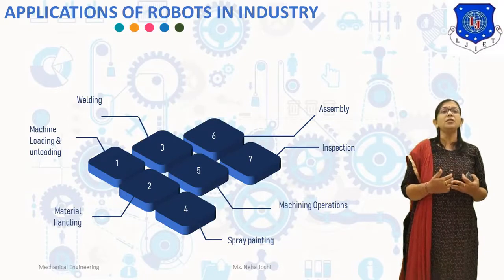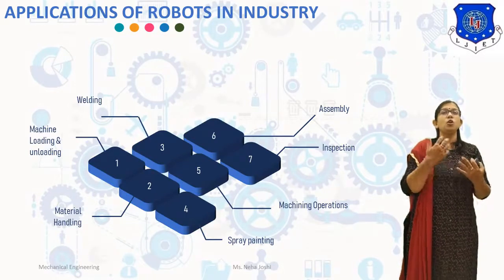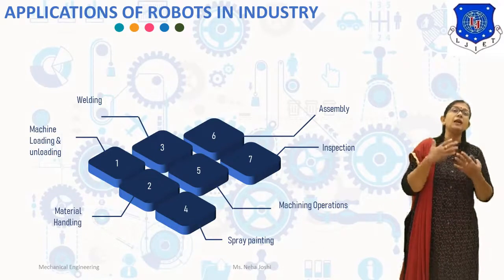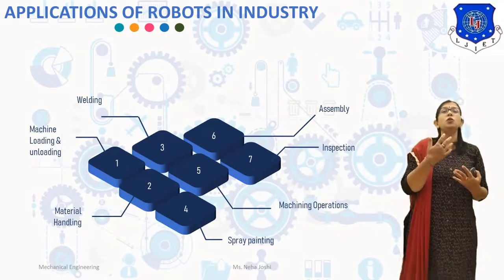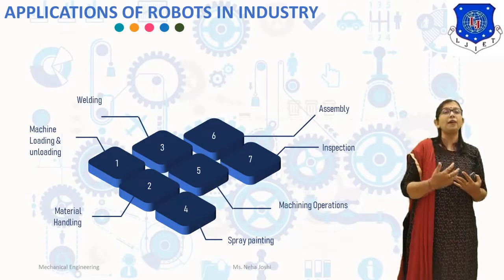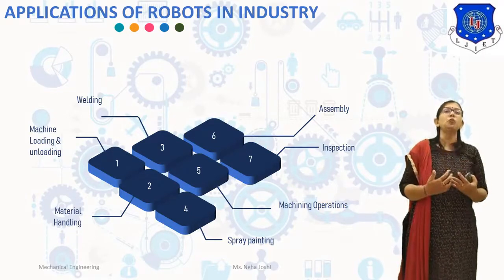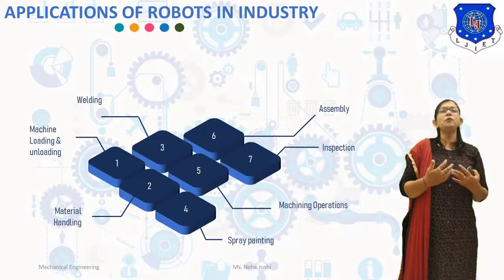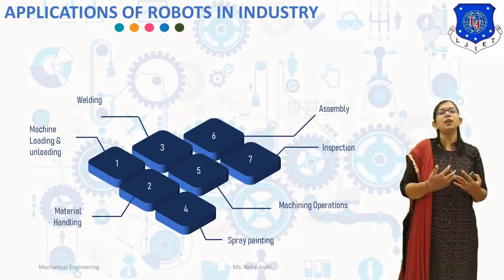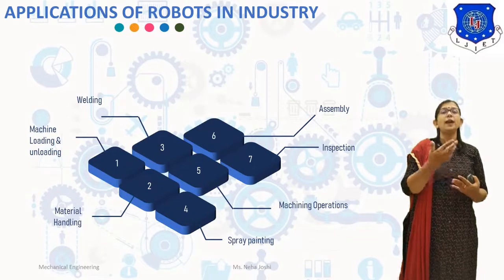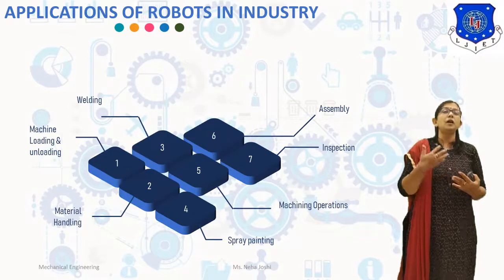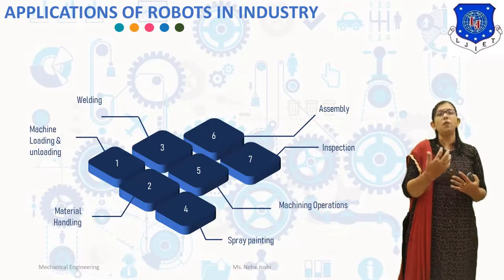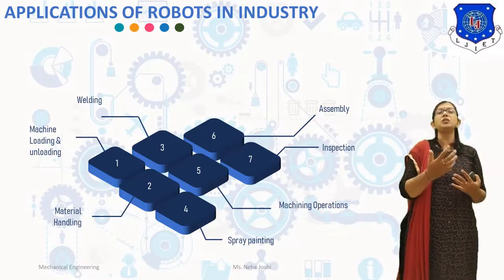The next application is machining operations. Robots are used for different machining operations like milling, drilling, and grinding. The robot's rotating spindles are used as end effectors, and tools are fixed to the rotating spindles for performing machining operations. Robots used for machining operations are subject to high cutting forces and hence should be robust. Cartesian configuration and cylindrical configuration robots are widely used in machining operations.